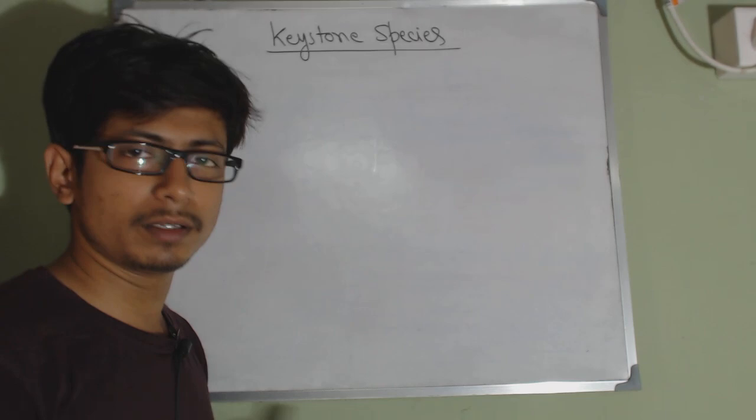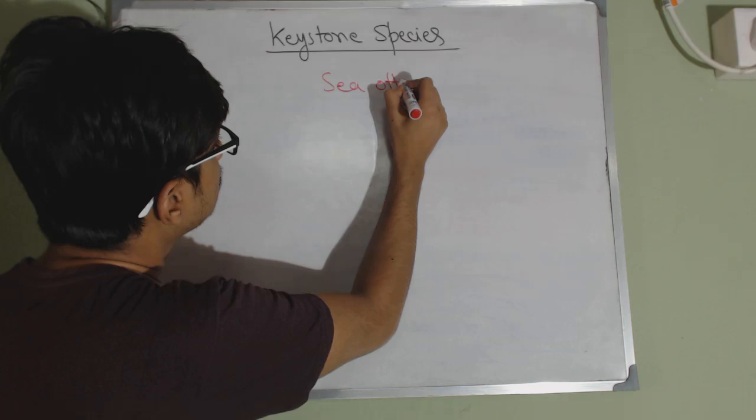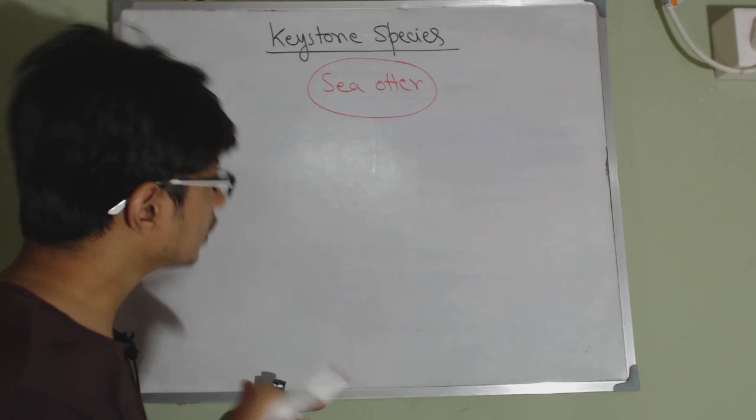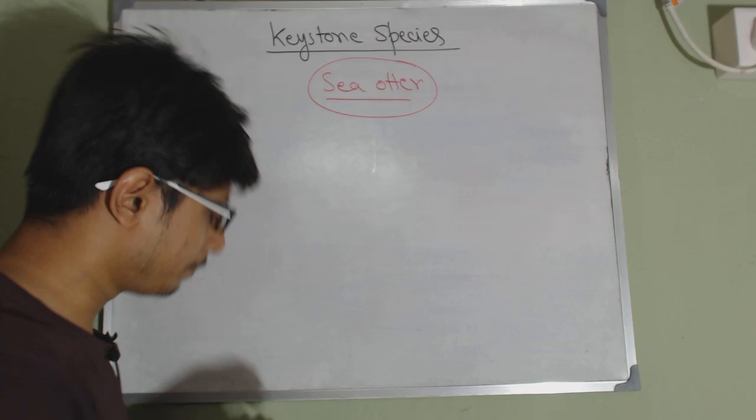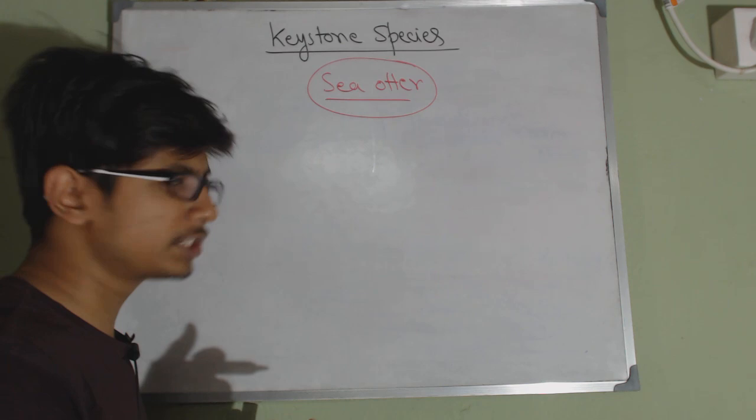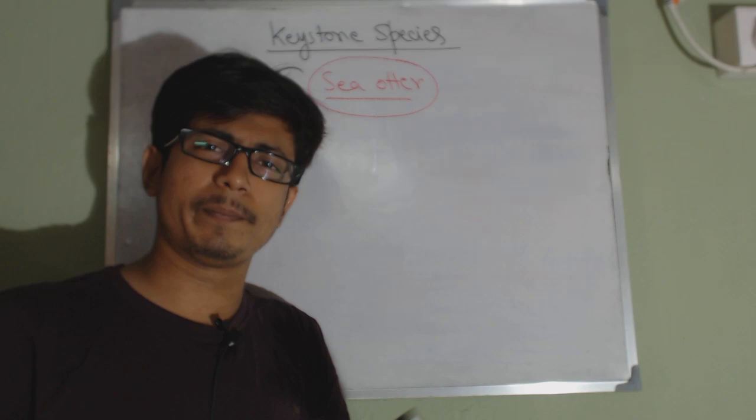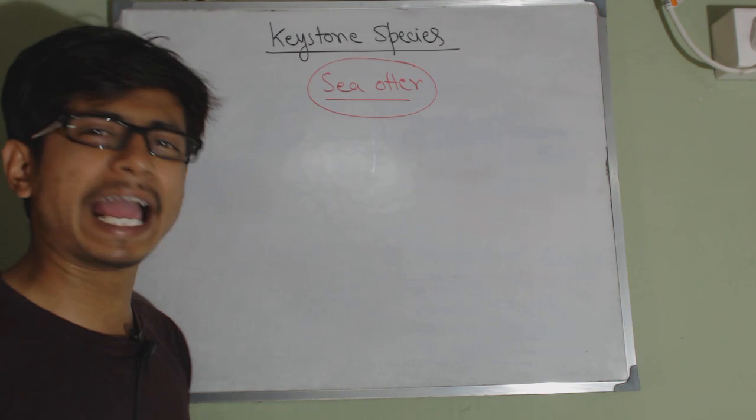Let's give you a simple example to explain the whole thing. Sea otter is an example of keystone species. Why is sea otter a keystone species? Let's assume a simple scenario. In the ocean, in most regions you see there are kelp forests. Kelp is a type of plant, a type of algae.